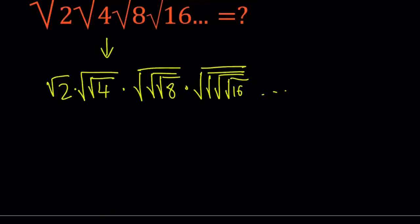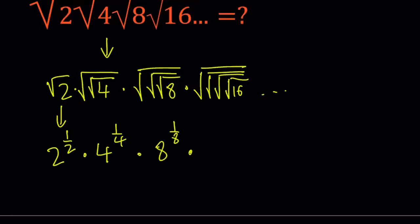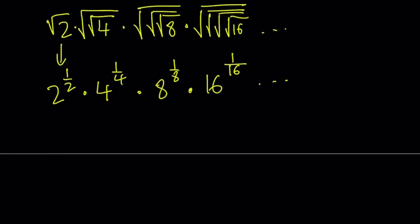The first one can basically be written as 2 to the power 1 half, which is the square root of 2. And the second one — the square root of the square root of something is basically something to the power 1 half to the power 1 half, which becomes something to the power 1 fourth. So we can write this as 4 to the power 1 fourth, then 8 to the power 1 eighth, then 16 to the power 1 over 16, and it'll just continue. We have a power of 2 in the base and the exponent is its reciprocal.